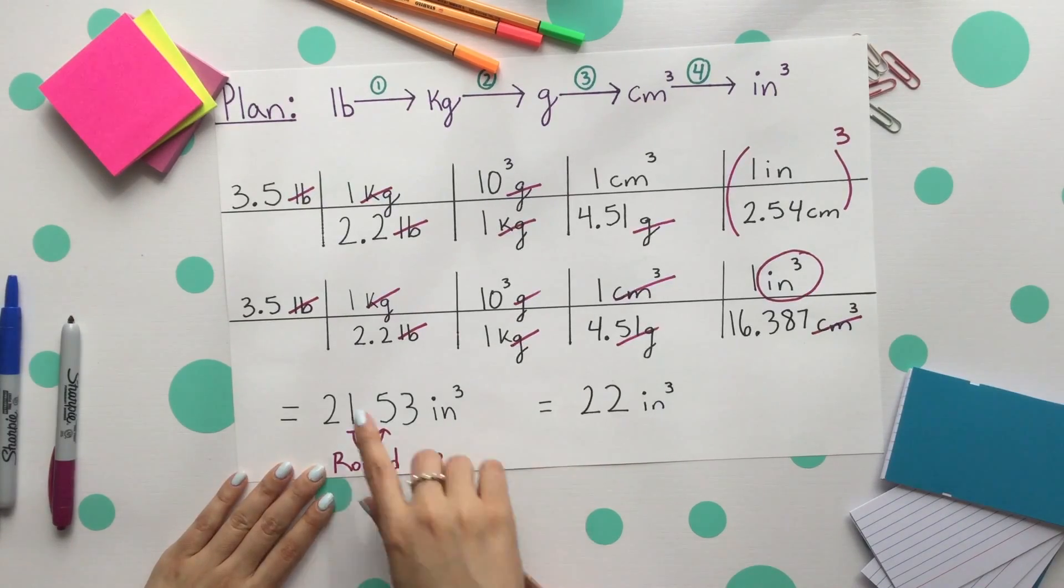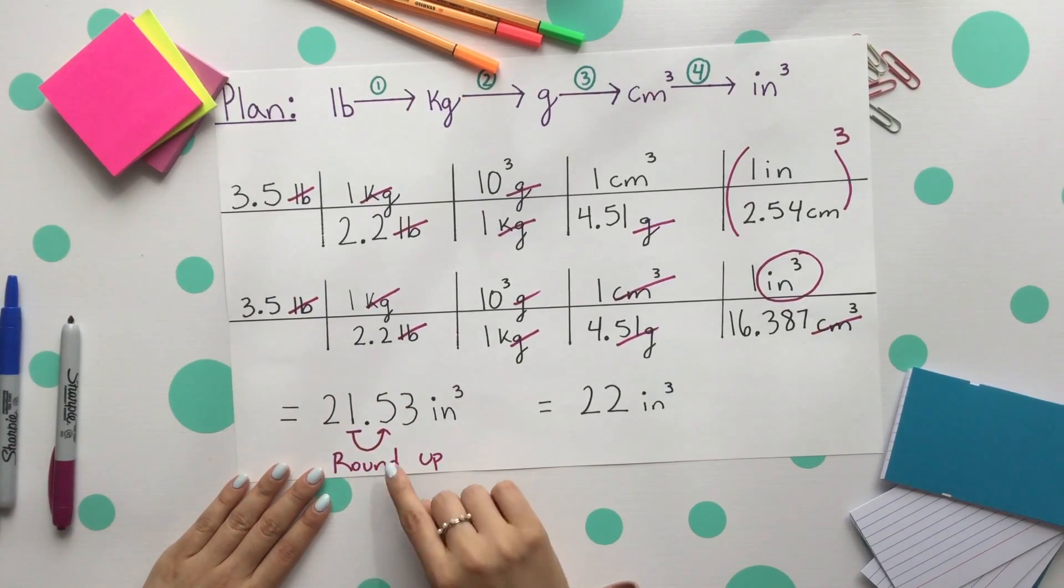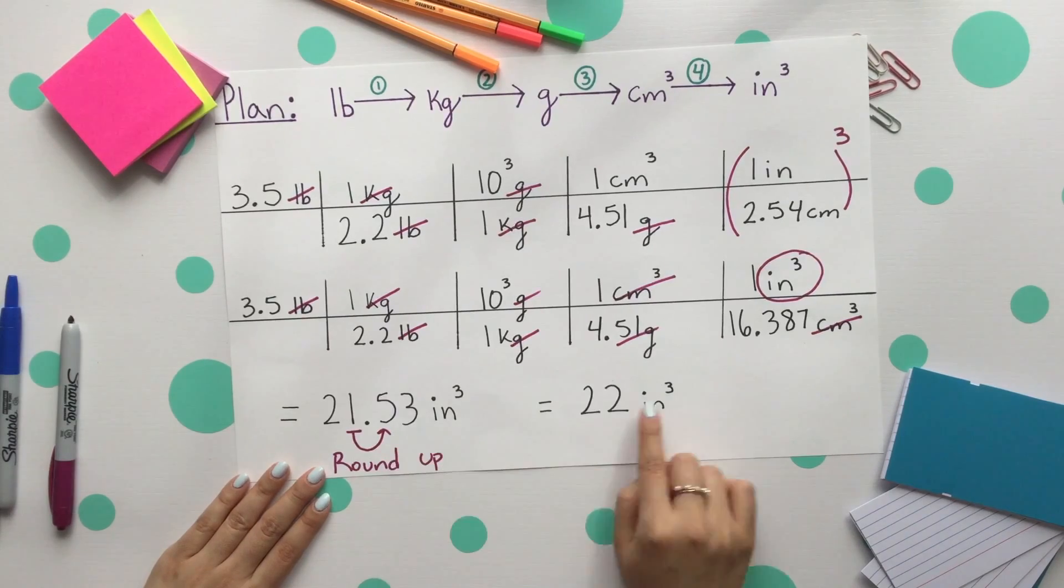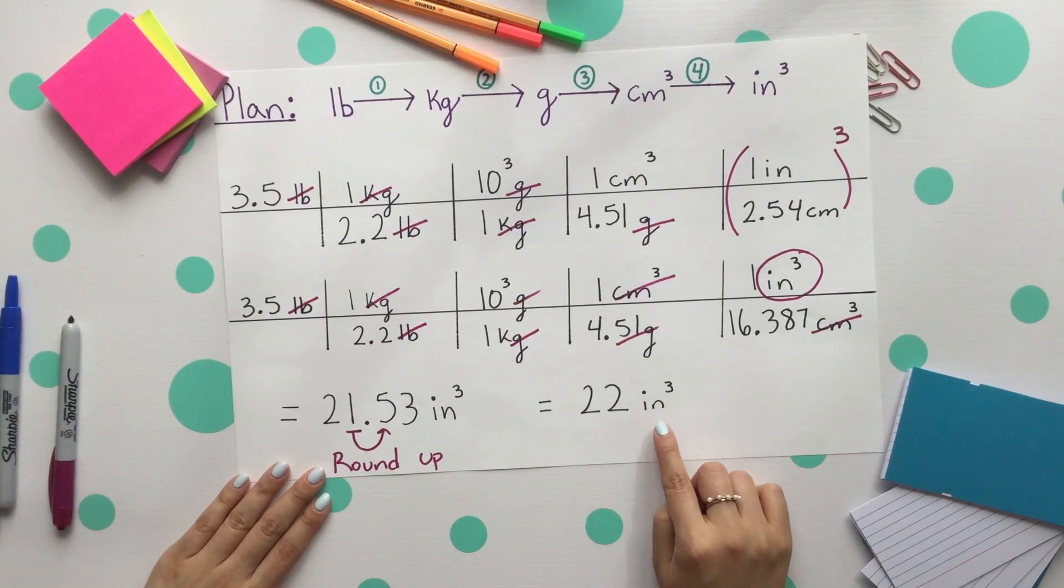However, our given was only two sig figs, so we'll go ahead and round up. Our final answer is 22 cubic inches.